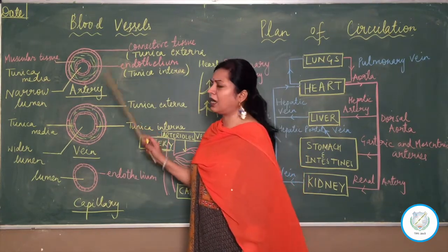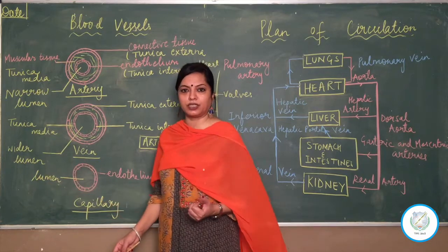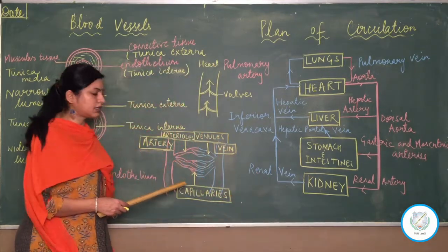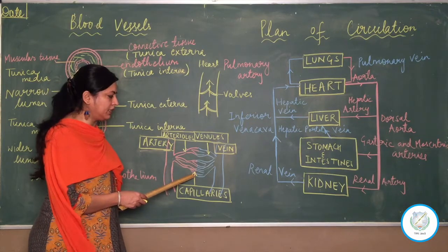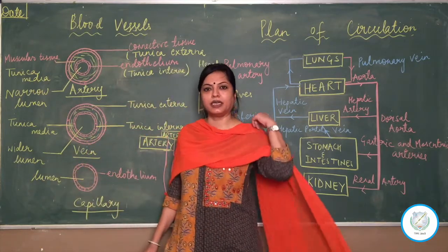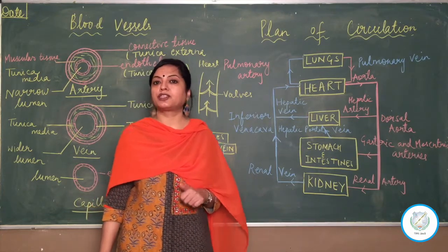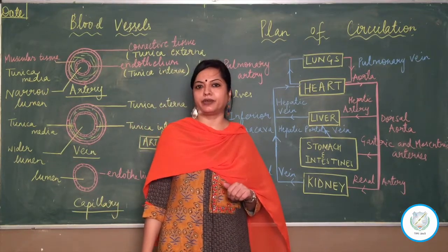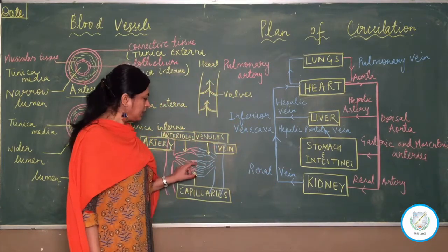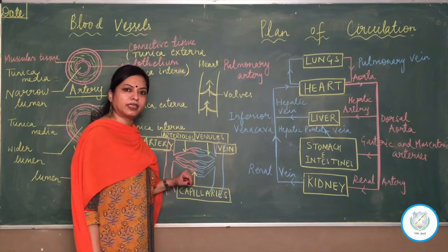Arteries supply oxygenated blood to an organ and veins collect deoxygenated blood from the organ back to the heart. What are capillaries doing? Arteries break into capillaries inside the organ, and these capillaries are very thin-walled — surrounded by only a single layer of epithelium cells. Why are capillaries thin-walled? First, for exchange of gases — oxygen and carbon dioxide. When blood enters an organ, the capillaries need to be thin-walled to give oxygen to the needy cells and collect CO2 from them.